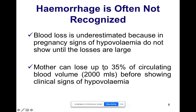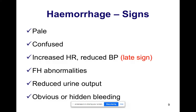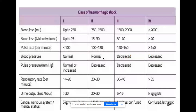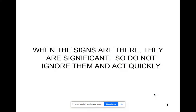Blood loss is underestimated because in pregnancy signs of hypovolemia do not show until losses are large. Patients can lose up to 35 percent of circulating blood volume — about two liters — before showing clinical signs of hypovolemia. Signs to look for include pallor, confusion, tachycardia, hypotension, fetal heart rate abnormalities especially with abruption, reduced urine output, and obvious or hidden bleeding. This table shows the classes of shock: if your patient is confused and anuric, that's class four and the patient is in danger. Do not ignore these signs and act as soon as possible.